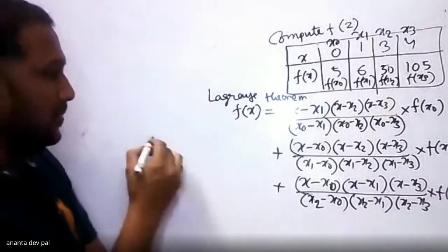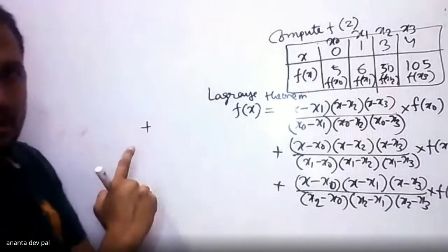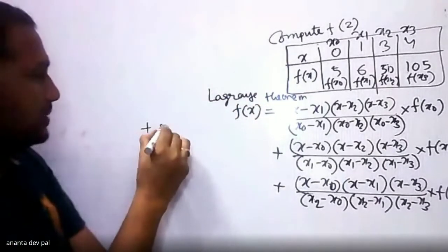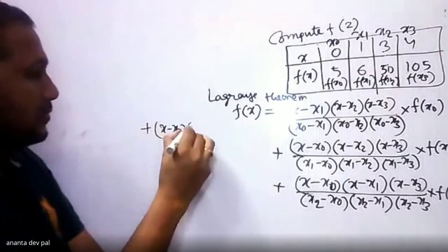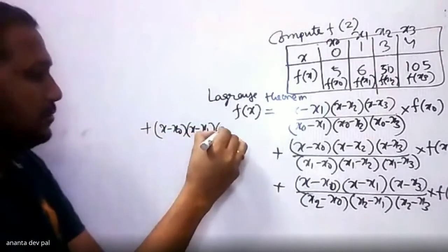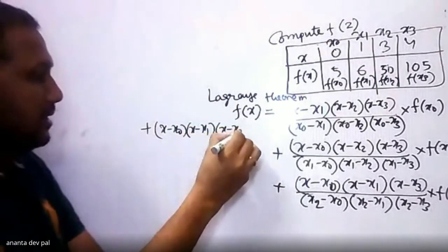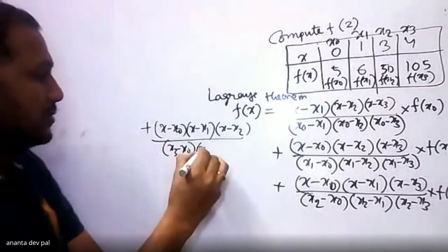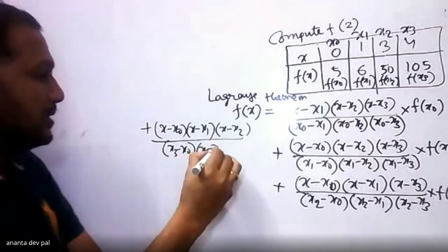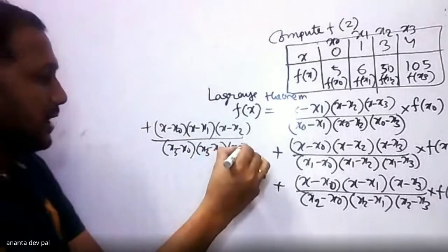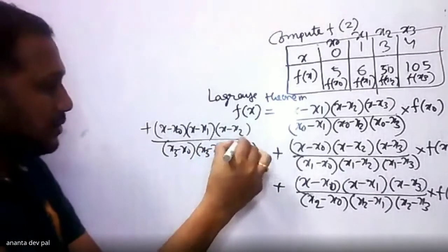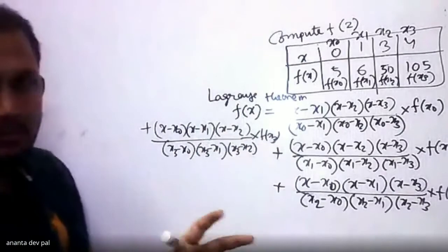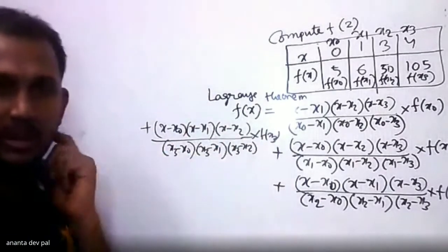Plus, for x3, the fourth term is: (x minus x0)(x minus x1)(x minus x2) divided by (x3 minus x0)(x3 minus x1)(x3 minus x2), multiplied by f(x3). So this is the total formula — you have to sum all these terms.